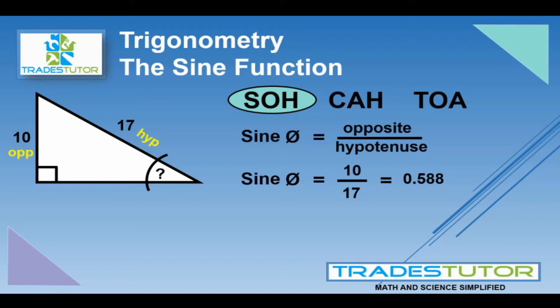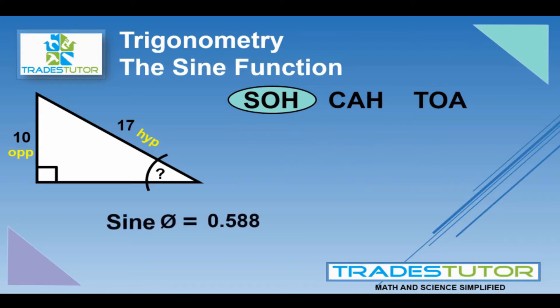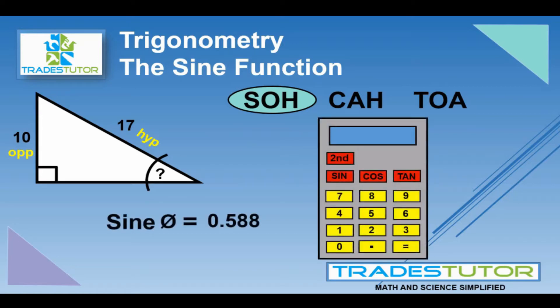Great. What do we do from here? That doesn't give us the angle. We have to now go to our calculator and figure that out. That number is just the relationship between the opposite and the hypotenuse. We've got to figure out the angle from that. So we'll put the 0.588 down there, and we'll bring in our trusty little calculator.